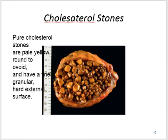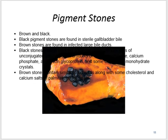These are the cholesterol stones. You can find multifaceted stones filling the gallbladder of variable sizes and dark brown color. Then pigment stones — brown and black. Black pigment stones are found in sterile gallbladder bile, while brown stones are found in infected bile ducts. Black stones contain unconjugated bilirubin, calcium phosphates, glycoproteins and calcium monohydrate crystals. Brown stones contain similar products along with some cholesterol and calcium soaps.